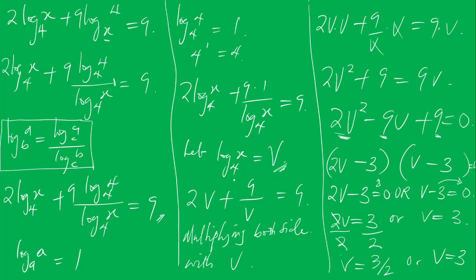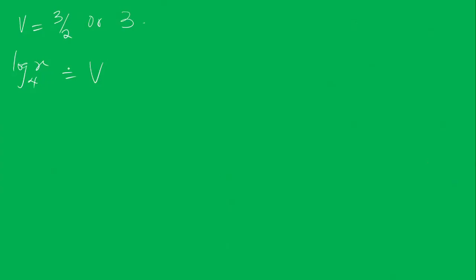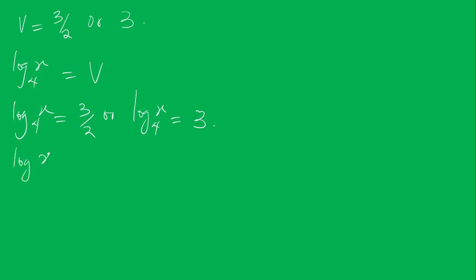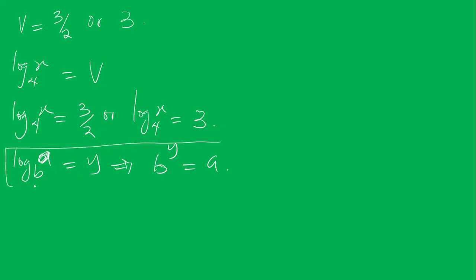From log X base 4 equals V, using the law of logarithms — transforming a logarithm into indices — we have the relationship that 4 raised to power Y equals X, or equivalently b log A base b equals A.